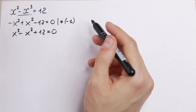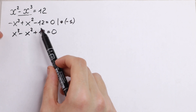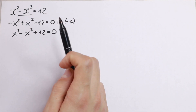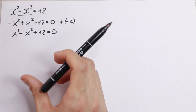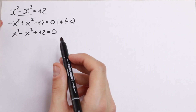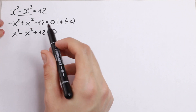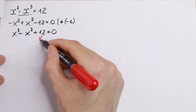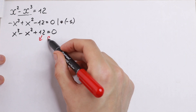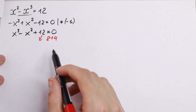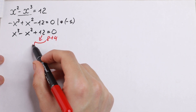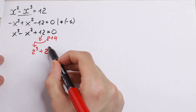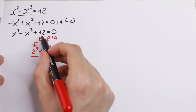So what are we going to do next? There are more approaches to solve this equation and we can write it in different ways, but I want to show you a really good approach. Take a look: this 12 we can write as 8 plus 4. Moreover, 8 can be written as 2 cubed and 4 can be written as 2 squared. So this is the same 12, just written as 2 cubed plus 2 squared.